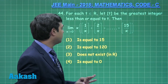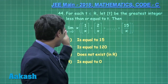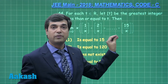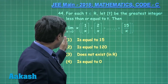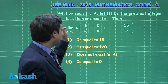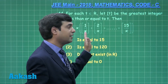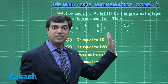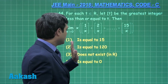Let us consider question number 44, which requires finding a limiting value involving the sandwich theorem. The limit is x approaching 0 plus, of x multiplied with the greatest integer of 1/x plus greatest integer of 2/x, up to 15 terms.